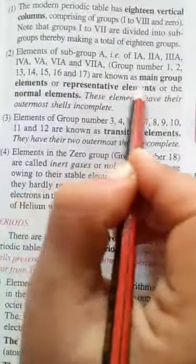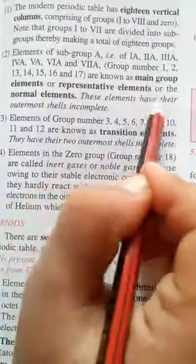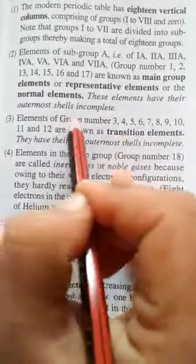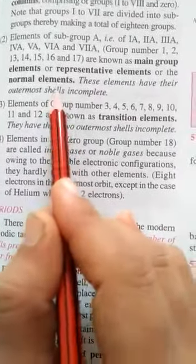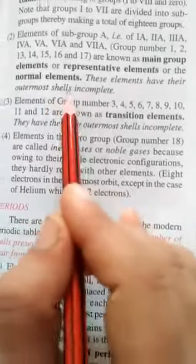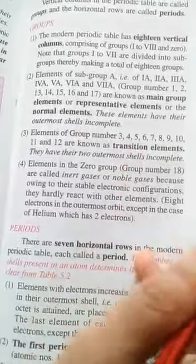These are known as main group elements, or representative elements, or normal elements. These elements have their outermost shell incomplete. The outermost shell is incomplete, as we can see in the last seventh period.